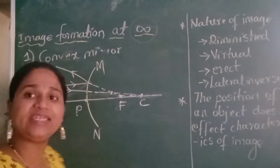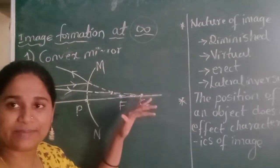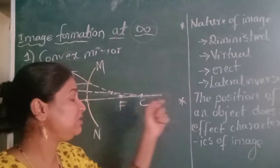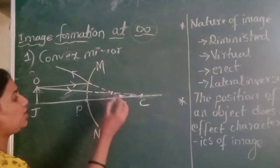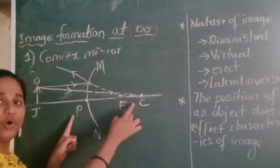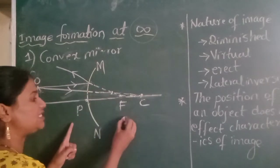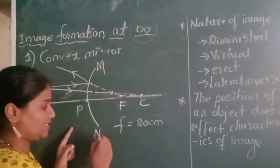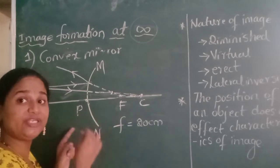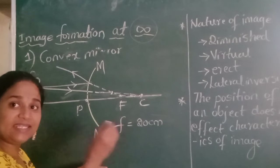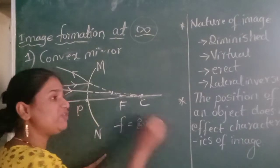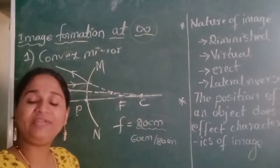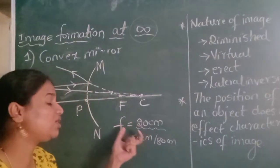So what do you mean by infinity? In this concept, infinity refers to the far distance — the object is placed at a far distance. Let us consider the focal length. The distance between the principal focus and the pole of a spherical mirror is called the focal length. Let us consider a focal length of 20 centimeters. When an object is placed at infinity, it means at a far distance which should be related to the focal length — approximately 60 centimeters or 80 centimeters. So infinity here means it is not extremely far; it should be quite related to the focal length of the spherical mirror.